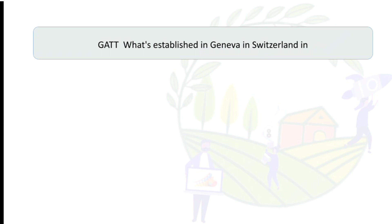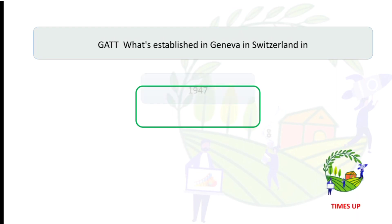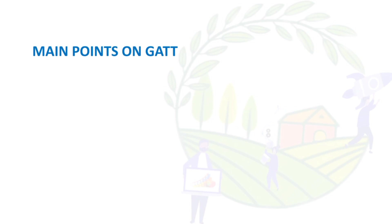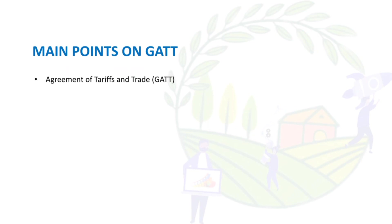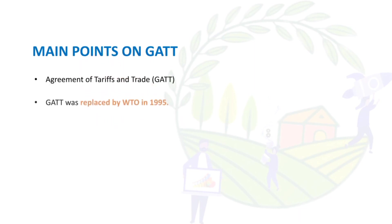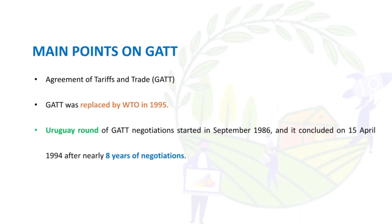GATT was established in Geneva, Switzerland, and the answer is 1947. Key points on GATT: GATT stands for General Agreement on Tariffs and Trade — note it is tariffs first, then trade. GATT was replaced by the WTO in 1995. The Uruguay Round of GATT negotiations started in September 1986 and concluded on 5th April 1994, after nearly 8 years of negotiation. This culminated in the formation of the WTO — the World Trade Organization.